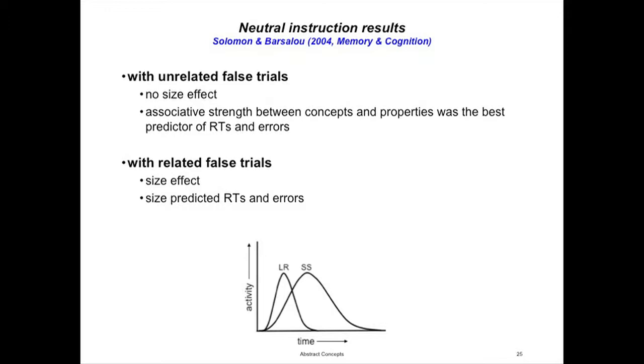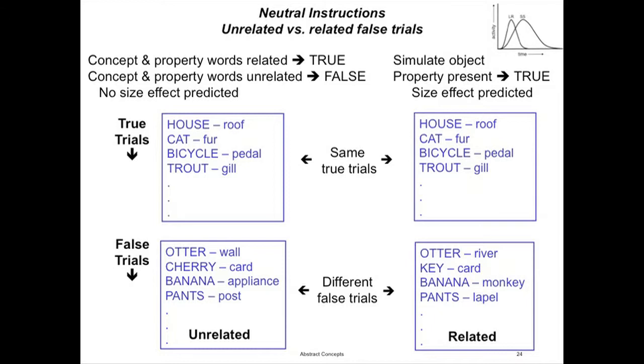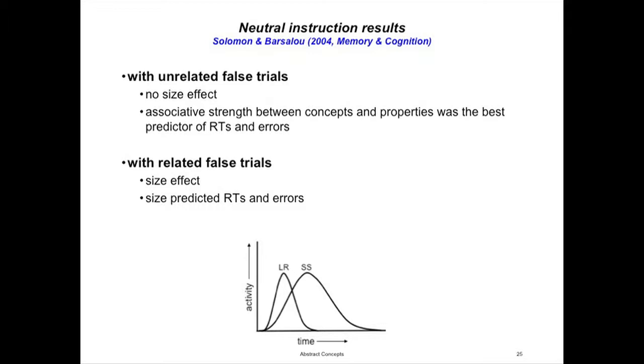Yeah, I think that's a real possibility, and it probably happens to some extent. But I still think the linguistic system gets active sometimes and carries off the task with relatively little use from the simulation system. In the property verification experiment — like 'does a house have a roof?' — we had the same true trials in both conditions but manipulated the relatedness of the false trials. In these regression analyses with many predictors, including property size, word familiarity, and word association strength, when the false trials were unrelated, by far the overwhelming best predictor was the associative strength of the two words.